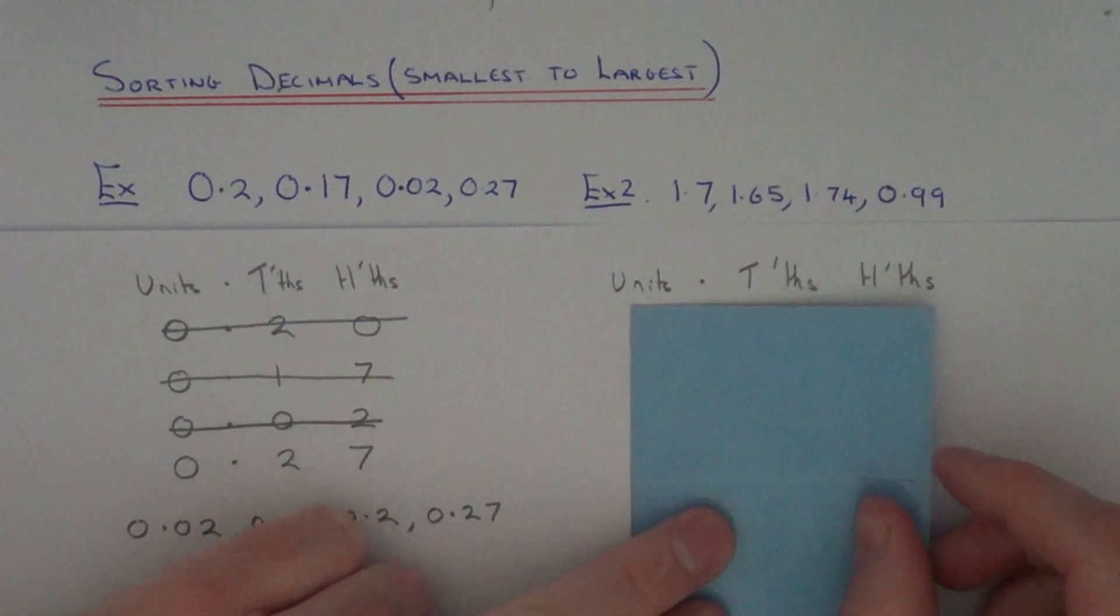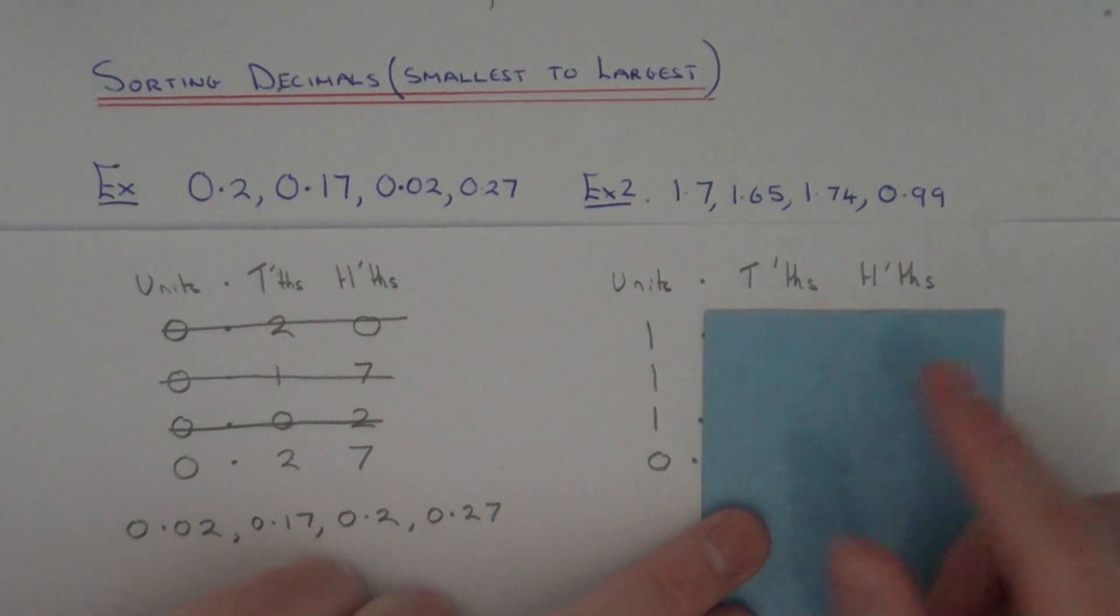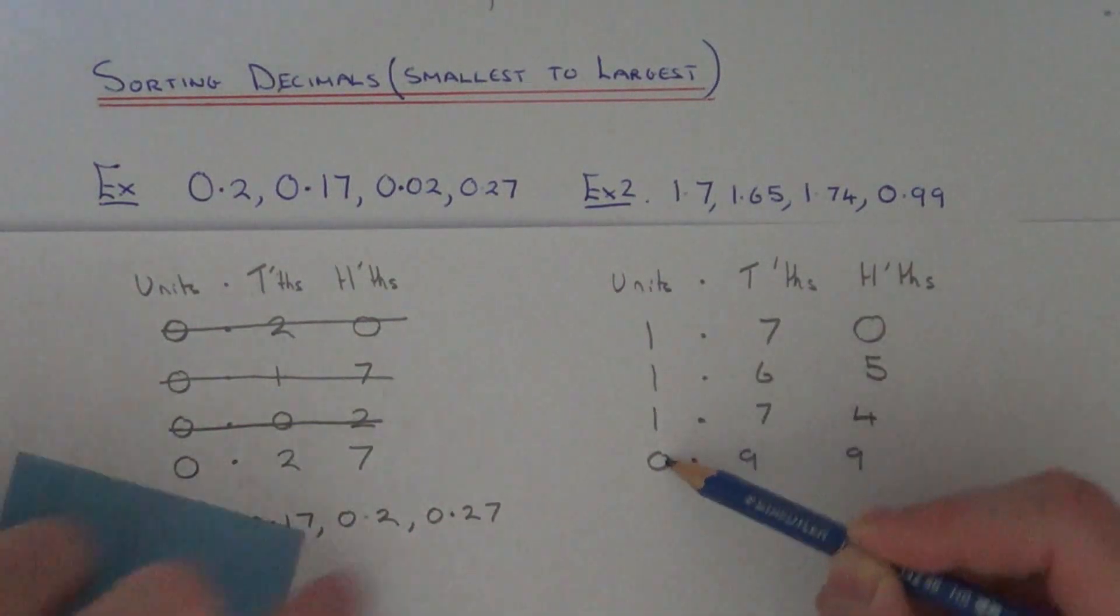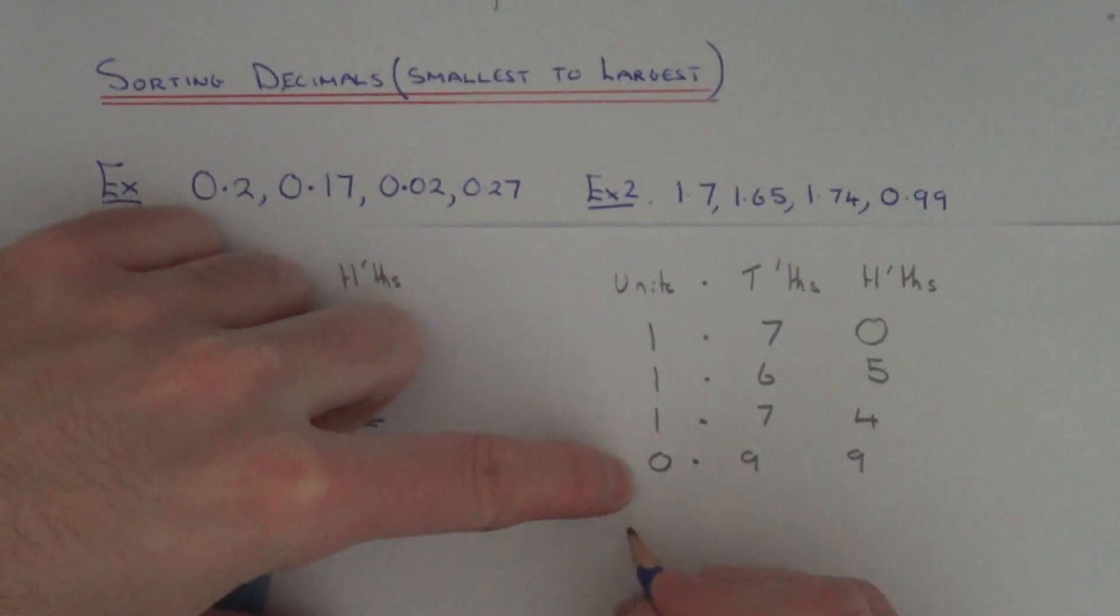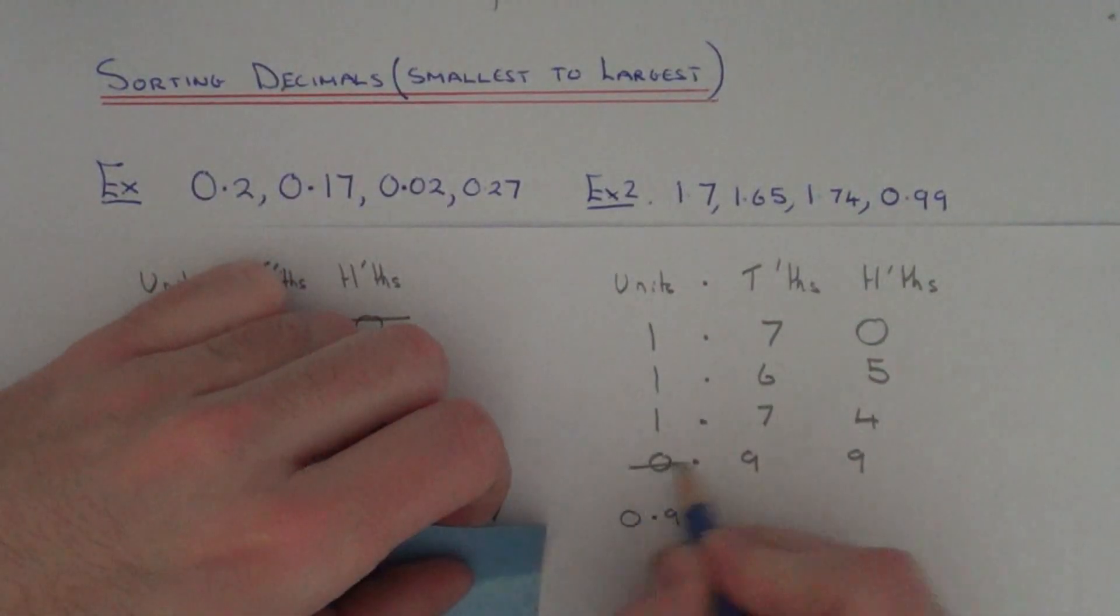So again if you get yourself a card so you can cover up the decimals, move it from left to right. As you can see in our first column we have a zero here, so this will mean 0.99 is our smallest decimal. So again cross this one out.